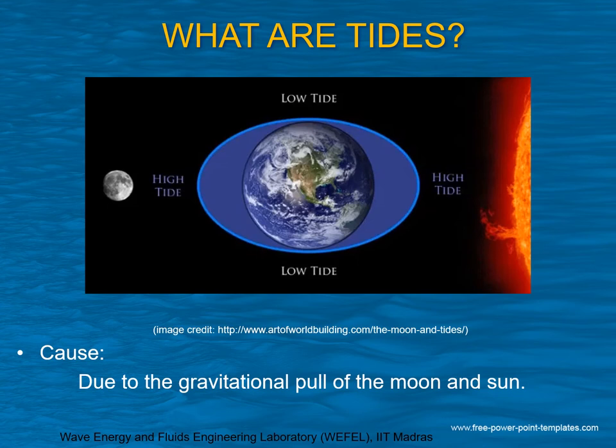First, to know what are tides — tides are caused due to the gravitational pull of the moon and sun. From the figure, you can see that the moon is on one side and the sun is on the other side, which causes this gravitational pull and in turn creates low tide and high tide, as can also be seen in the picture.